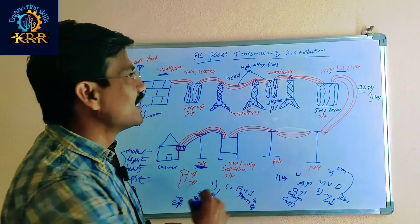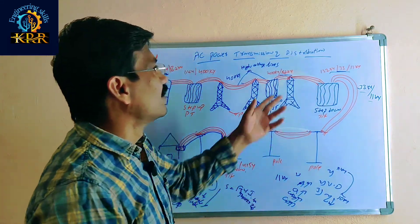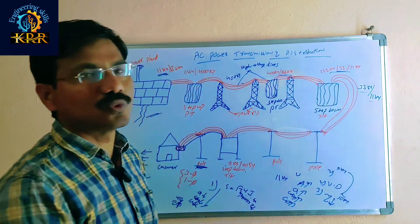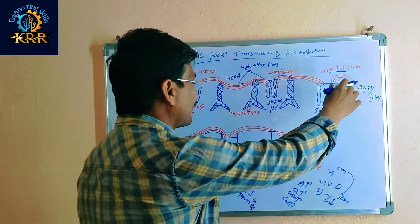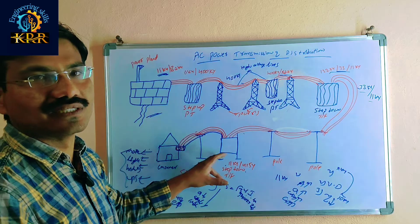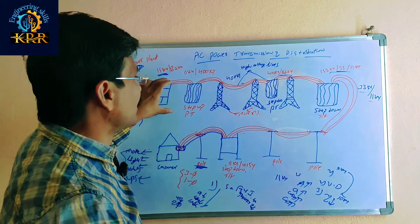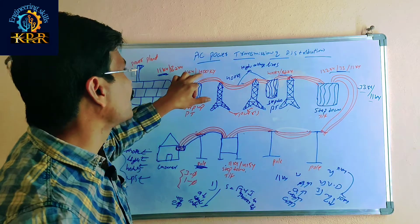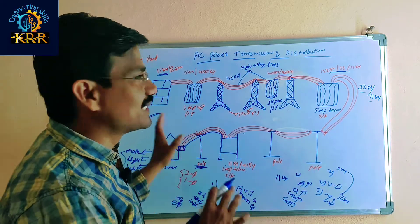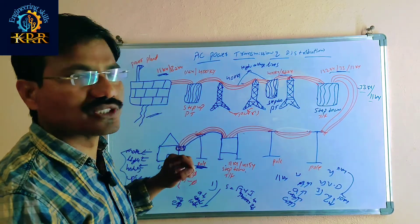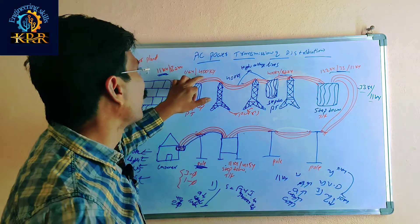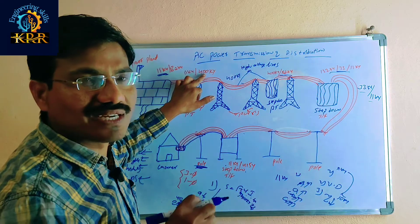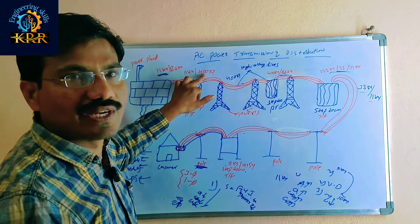Instead, this 11kV voltage is stepped up to 400kV. That 400kV voltage is transmitted over several kilometers, then stepped down near you — first to 132kV, then to 33kV or 11kV. When you step up voltage, power remains constant, so current reduces. Reduced current means smaller conductor size, less weight, and lower cost.